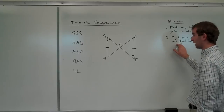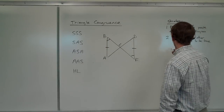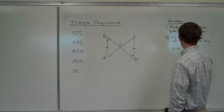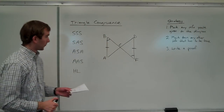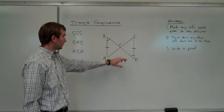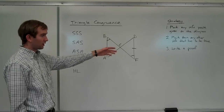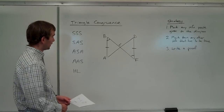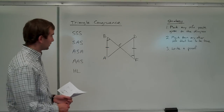You're going to keep doing that until you have enough information to satisfy one of the congruence postulates or theorems. And then step three: write a proof. Step three should be very simple. If you can explain to me why these two triangles have to be congruent — if you've gotten as far as step two — you've basically got it all on the diagram. You just have to write it down in two-column format or some other format you're asked to do.